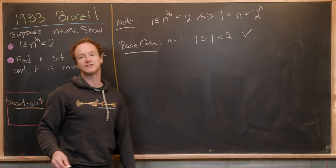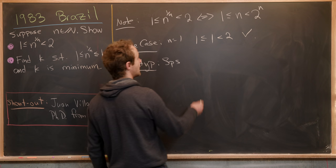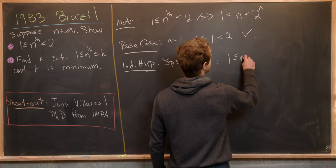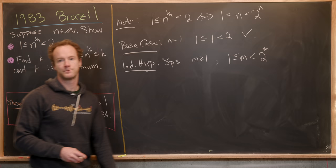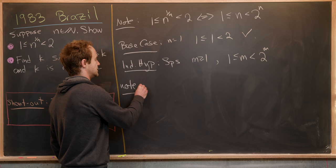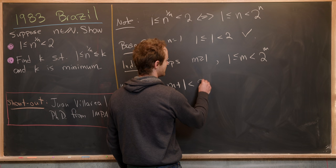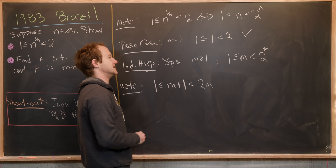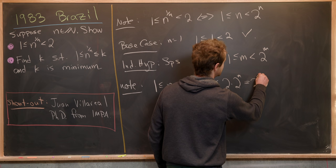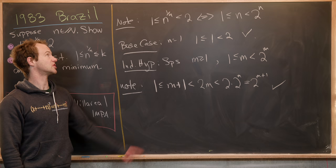Now let's make our induction hypothesis: suppose for m ≥ 1 we know that 1 ≤ m < 2^m. We want to consider m+1. Notice that 1 ≤ m+1, and since m ≥ 1 this is strictly less than m+m = 2m. By the induction hypothesis this is less than 2·2^m = 2^(m+1). That finishes the induction argument and this first part of the problem.